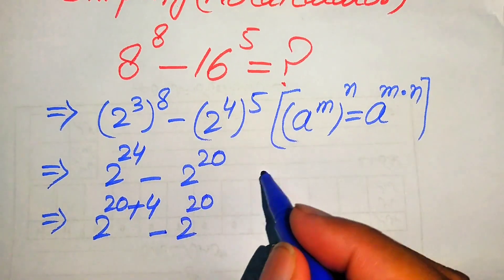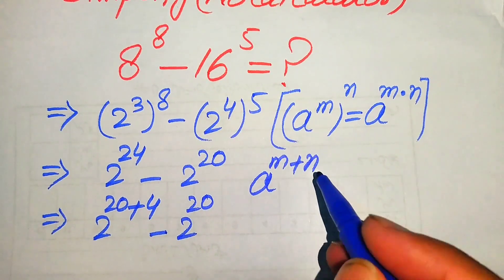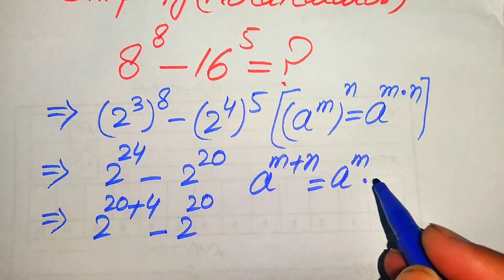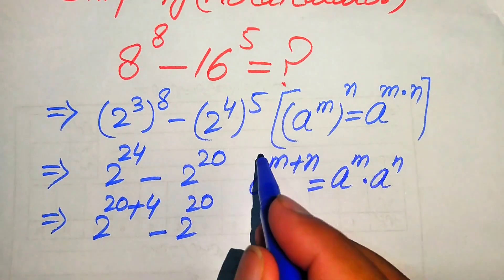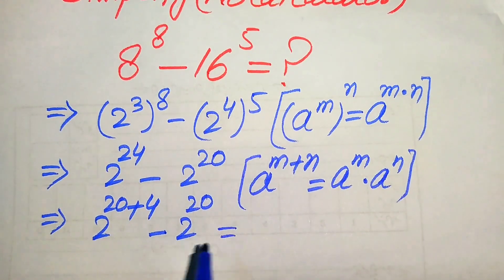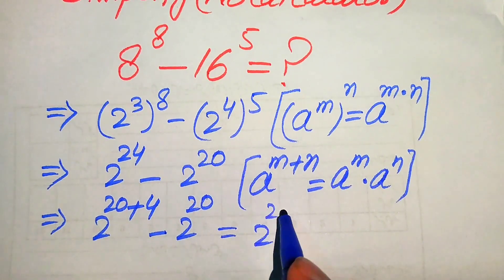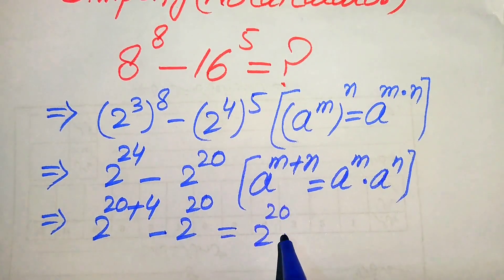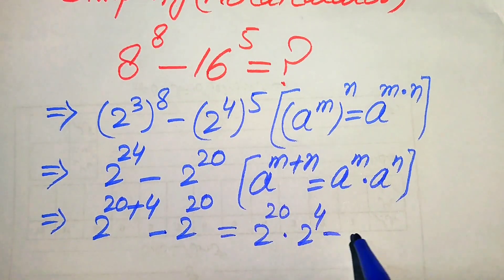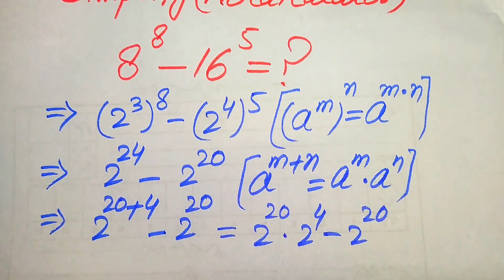Here we apply another exponent law: a to the power of m plus n equals a to the power of m multiplied by a to the power of n. According to this law we break the exponents, and it is written as 2 to the power of 20 multiplied by 2 to the power of 4, minus 2 to the power of 20.